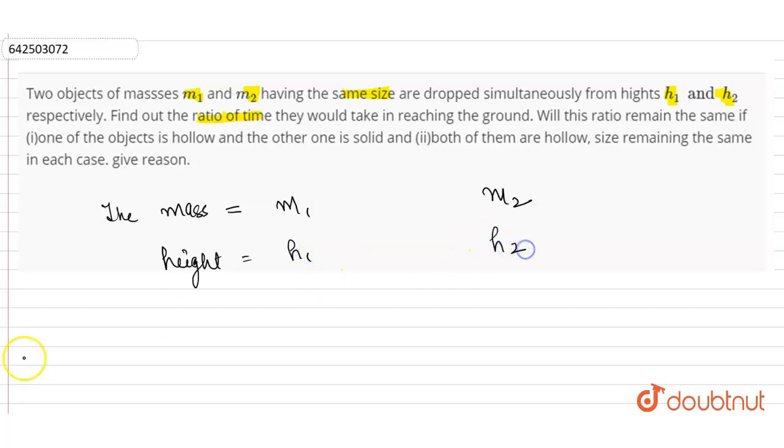Now from the second equation of motion we know s = ut + 1/2 at². Here the two objects of m1 and m2 have same size and are dropped simultaneously, so they are dropped, meaning the initial velocity u will be zero. We can take this s, the distance, as height h, and this is a free falling case, so a will become g, the acceleration due to gravity.